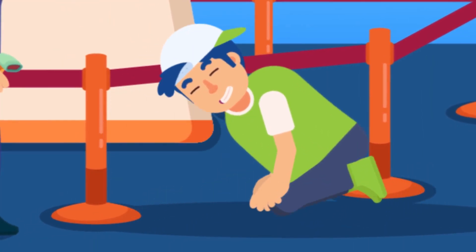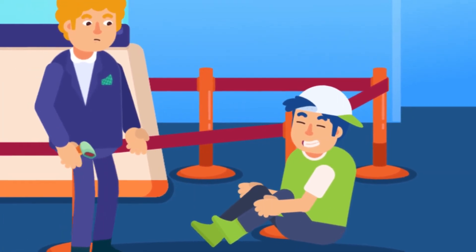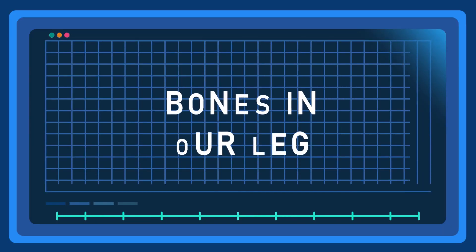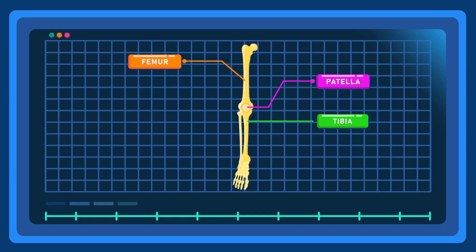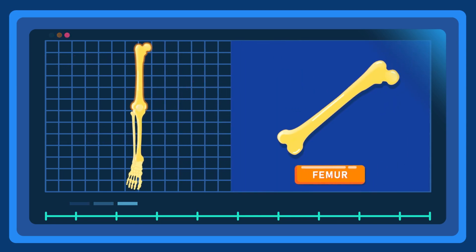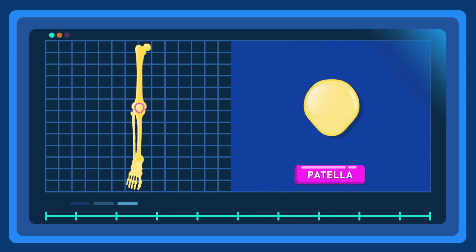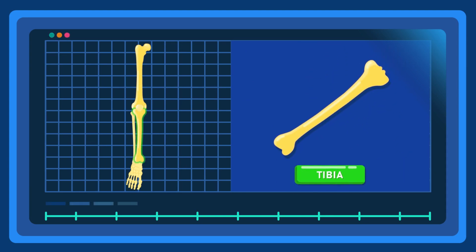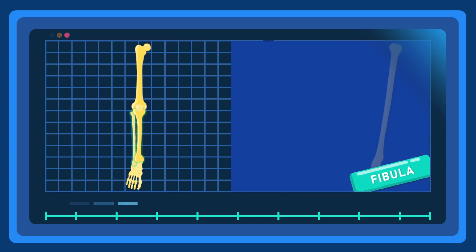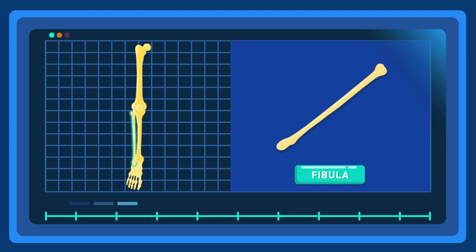What helps us walk? Understanding bones of the leg. Our lower limb consists of four main bones: femur, patella, tibia, and fibula. The femur is the bone in the thigh, the patella is the kneecap, the tibia is the shin bone — the larger of the two leg bones located below the kneecap — and the fibula is the smaller one.